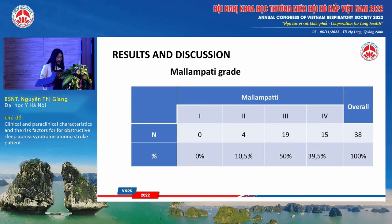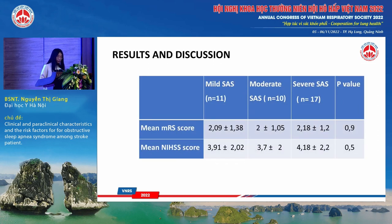In our study, Mallampati grade 3 was the most common finding, accounting for 50%, and no patient had Mallampati grade 1. Twenty patients with moderate stroke had NIHSS scores above 5, accounting for more than 50%, and there were 18 patients with mild stroke. We found that the severity of stroke was not associated with the severity of sleep apnea syndrome, which is consistent with other studies. This observation supports the hypothesis that sleep apnea syndrome often precedes stroke, and the high frequency of sleep apnea in TIA patients further supports this hypothesis.